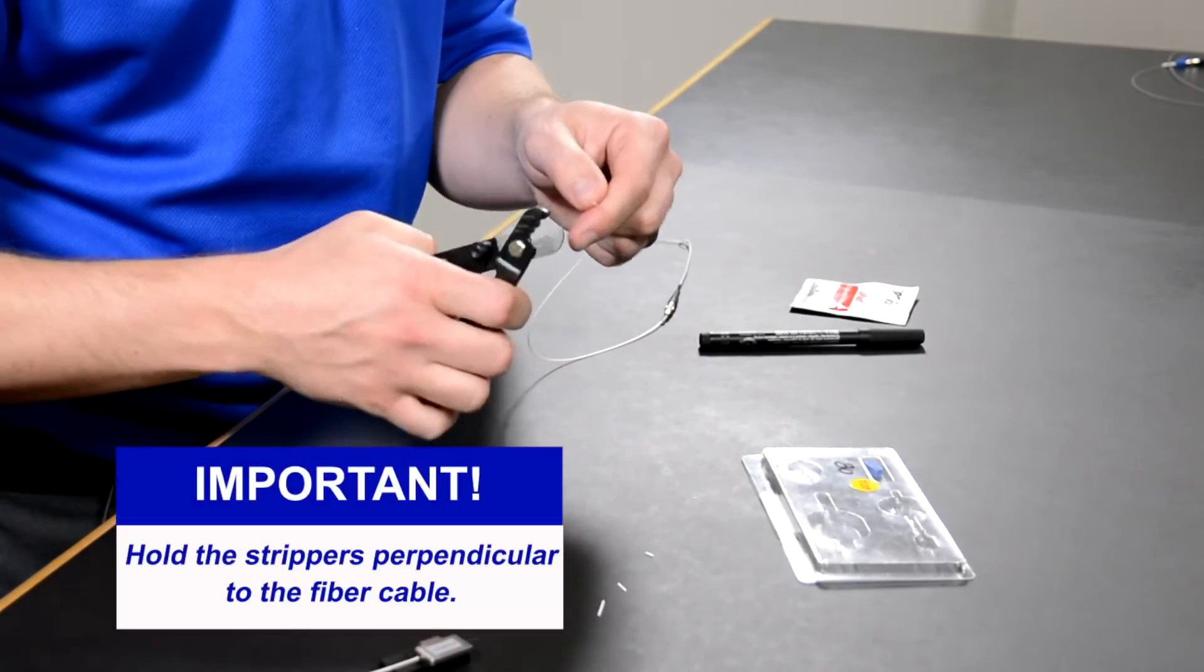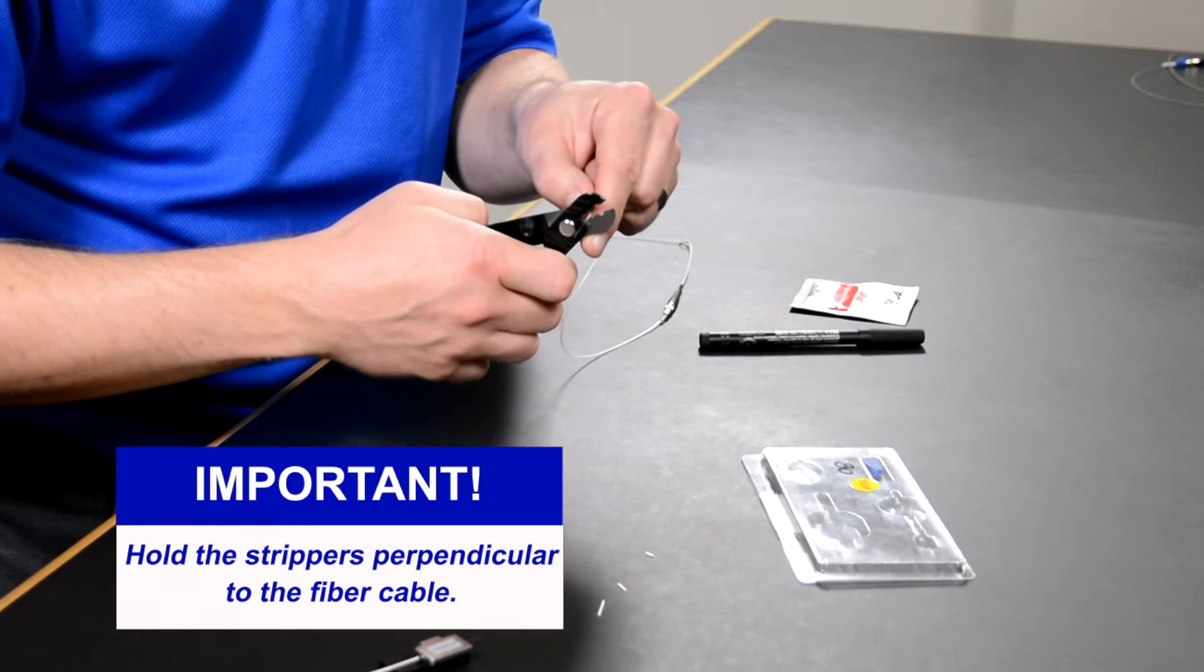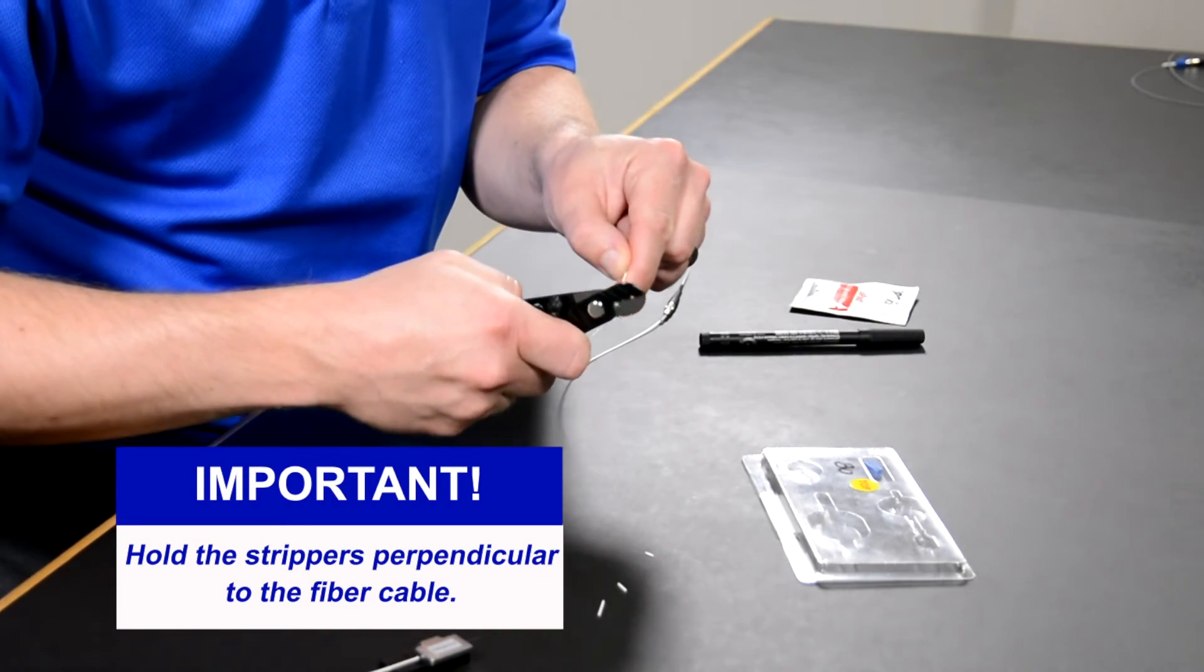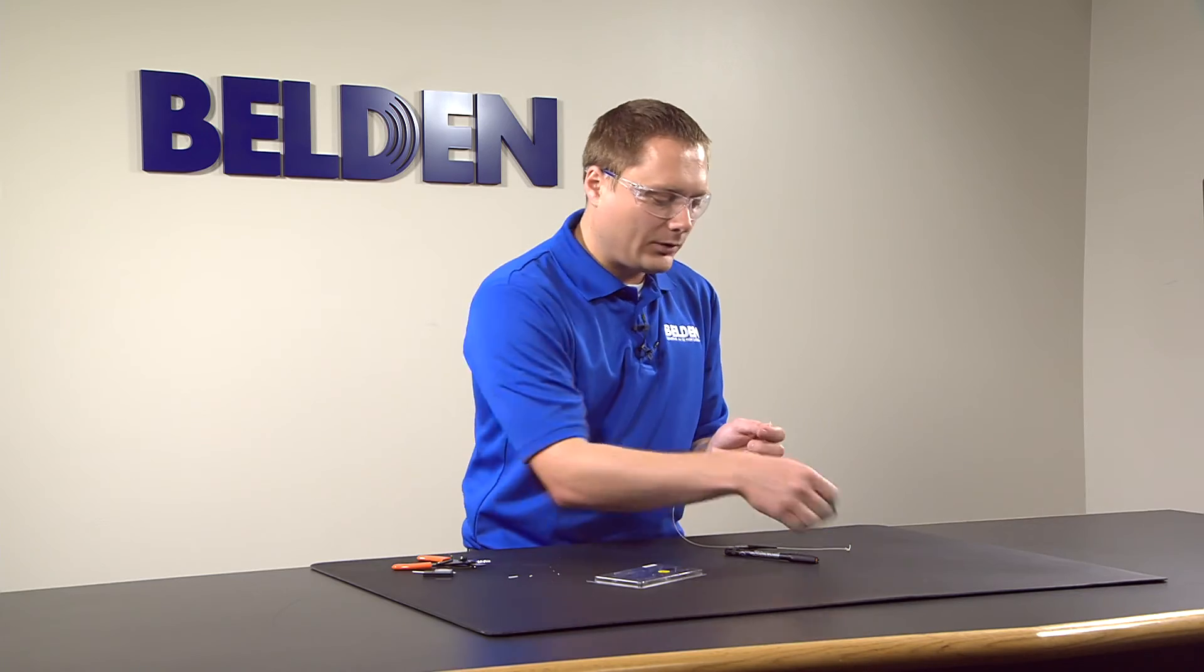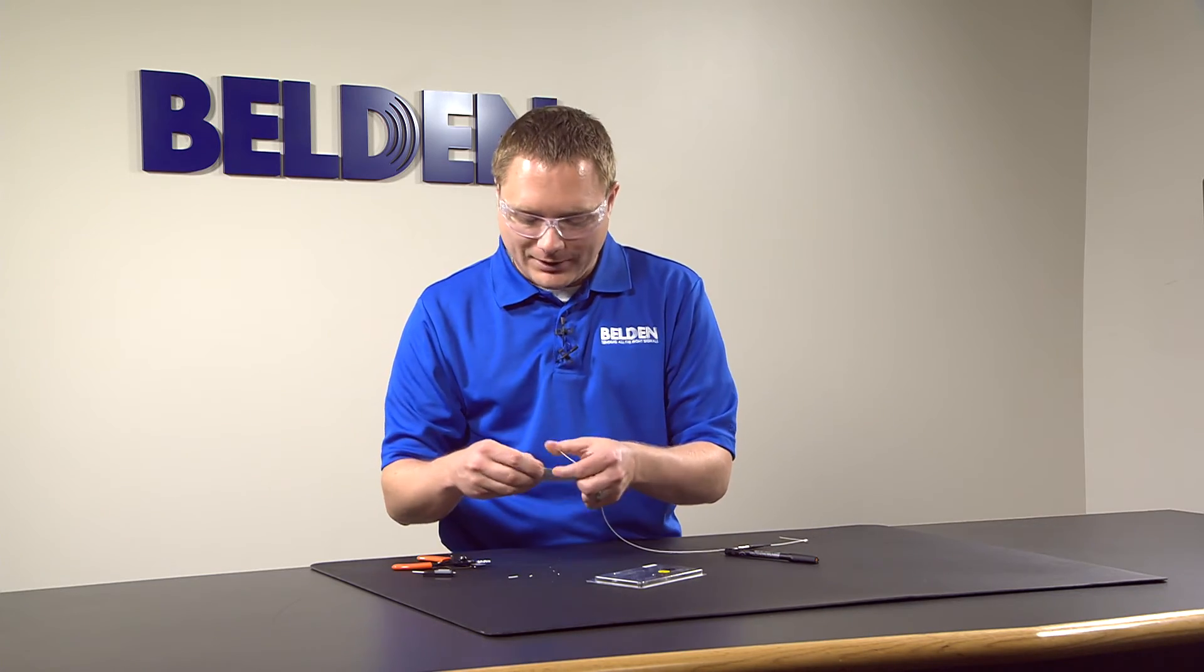We want to use the small groove in the strippers to remove the primary coating. There's a little bit of residue there, so we'll do it one more time, and then we want to take our alcohol wipe and remove that residue.